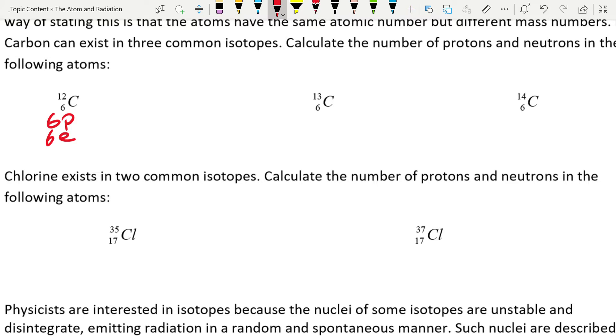However, over here we have another type of carbon, and you can see the only difference is that the mass number is different, which means this will also have six protons and six electrons. That's what makes carbon carbon.